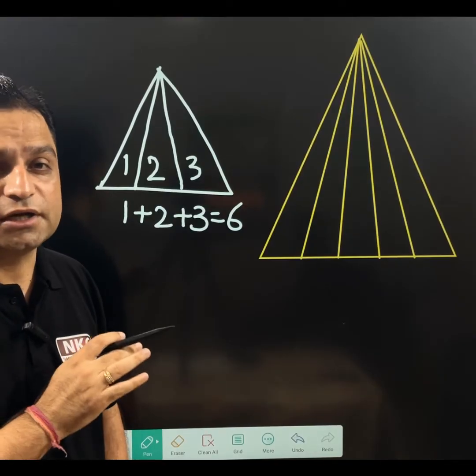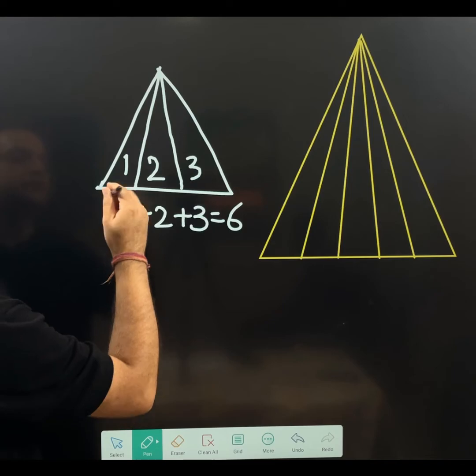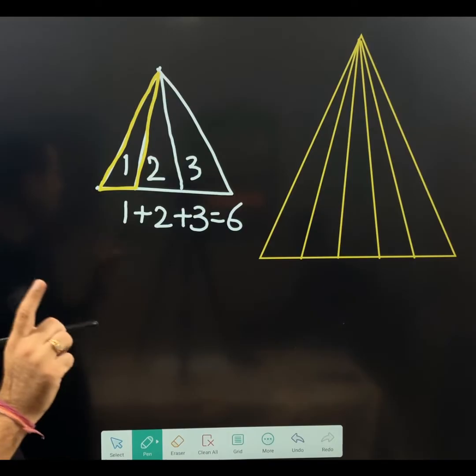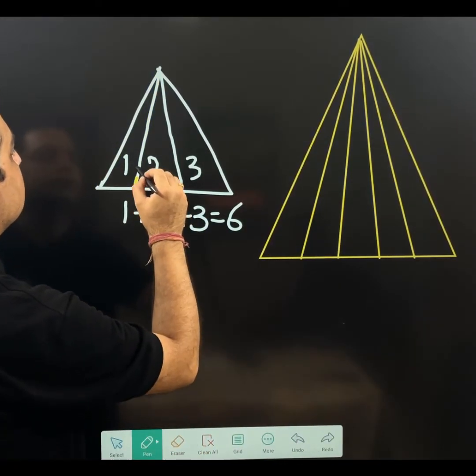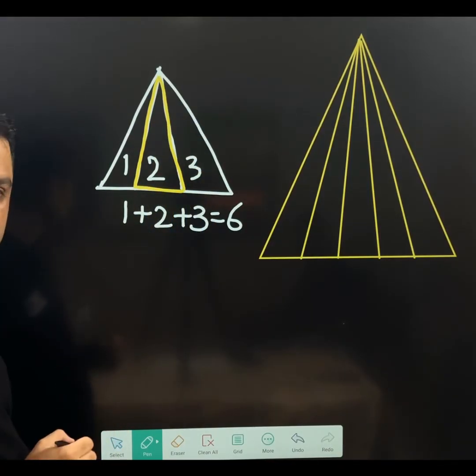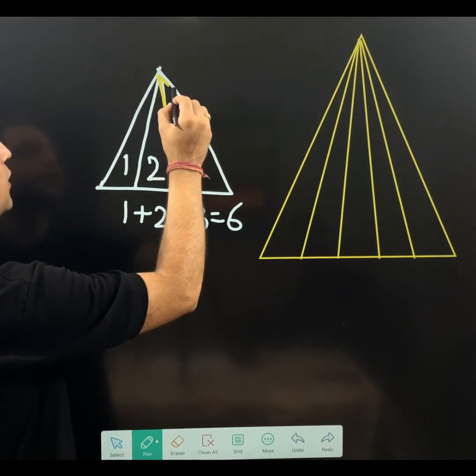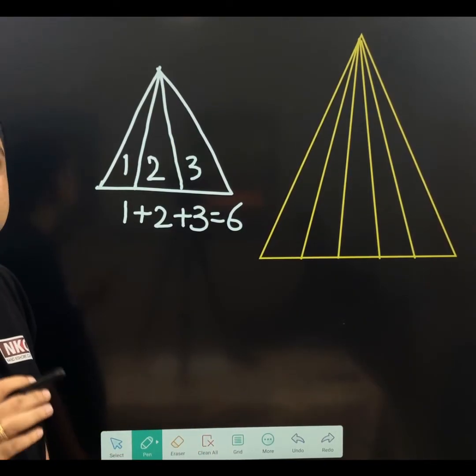And you can check those, which are 6 triangles here. See, first triangle, this one, right? Count it, triangle number 1. Then this is triangle number 2. Then this is triangle number 3. You will say, sir, these three triangles were already visible. Right. But we need to count them.